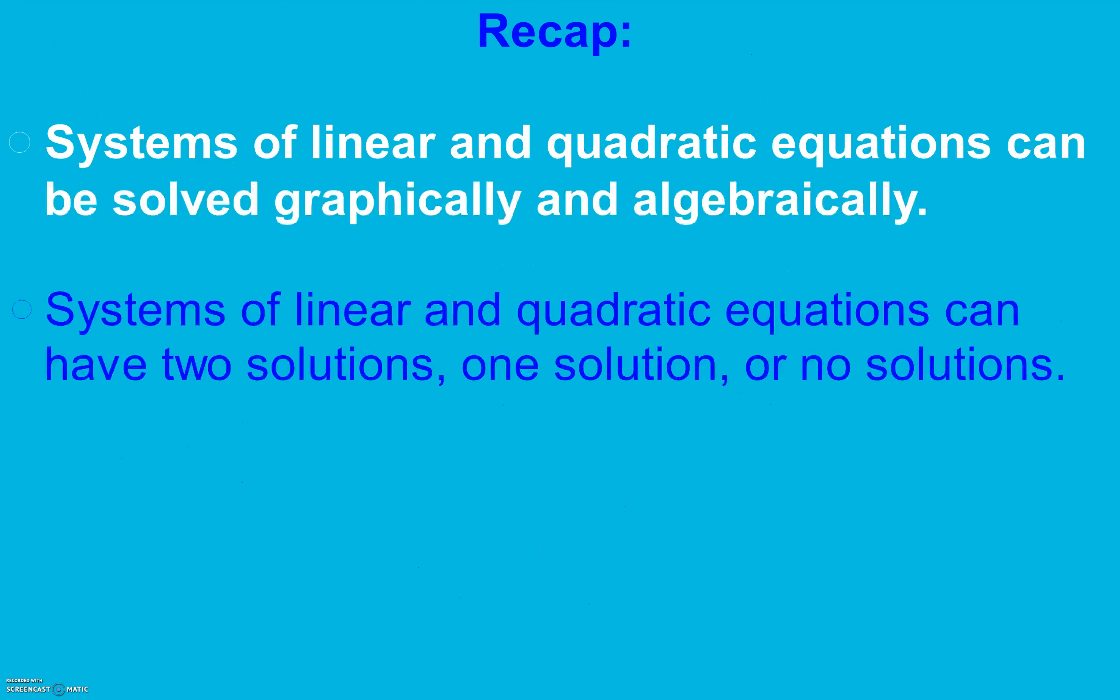Quick recap here. Systems of linear and quadratic equations can be solved graphically and algebraically. Systems of linear and quadratic equations can have two solutions if the lines intersect in two places, one solution if their graphs just meet at one point, or no solutions if they never meet. And that's all I have for section 9.8.